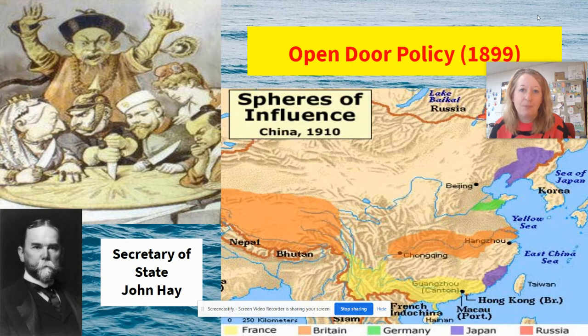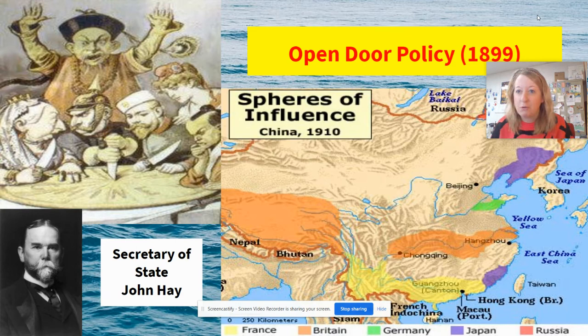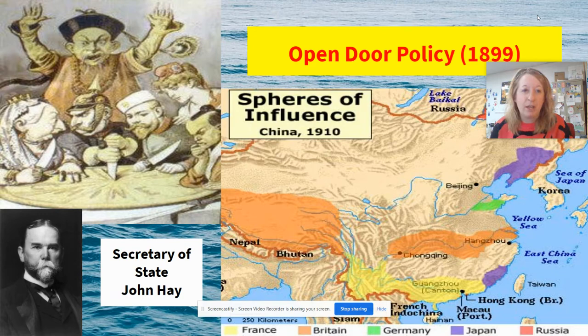This refers specifically to China. Essentially, other European countries like Japan, Russia, France, Great Britain, and Germany all had what was referred to as a sphere of influence in China. That meant that they controlled different trading ports and were trading with China and kind of had free reign to do so. So it was important to McKinley and many others that the United States also have a sphere of influence carved out.